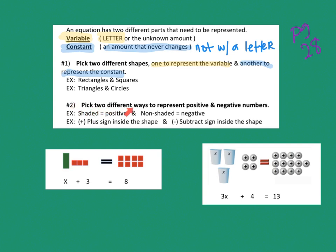The second thing to think about is we have to have a different way to represent a positive and a negative number. Possibly, you might want to shade your positive numbers and not shade your negative numbers. Or you might put a plus sign inside the shapes for positive numbers and a minus sign inside for negative numbers.